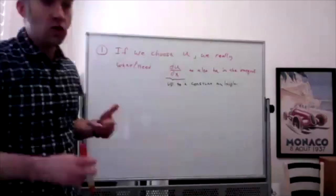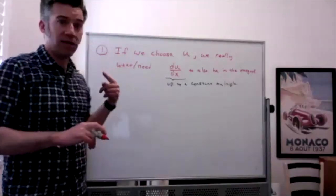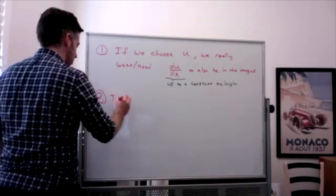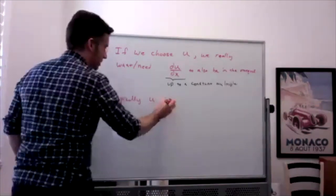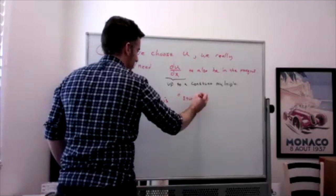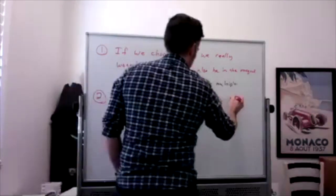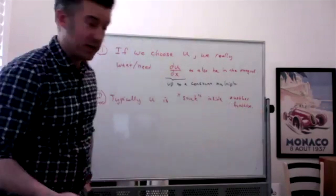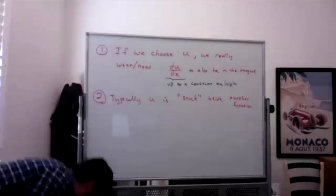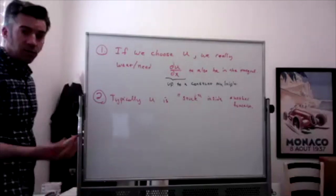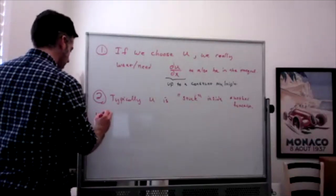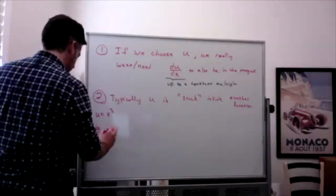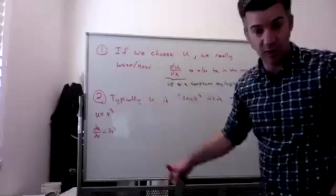So that's what we hope to have. Usually the way we look for u is by looking to see if it's stuck inside another function — u is stuck inside another function. Some examples of this: we're not going to do these ones, but let me give you a few. In these examples, my choice for u would be x cubed, and my du/dx would be 3x squared.